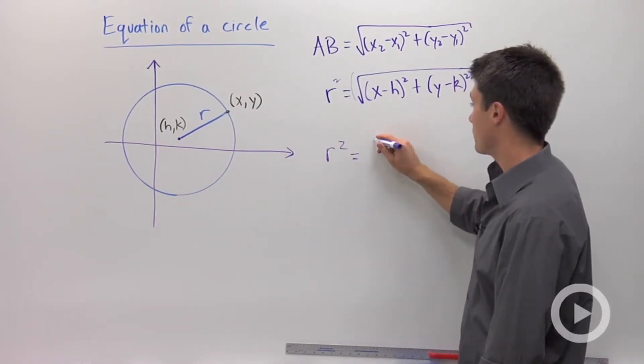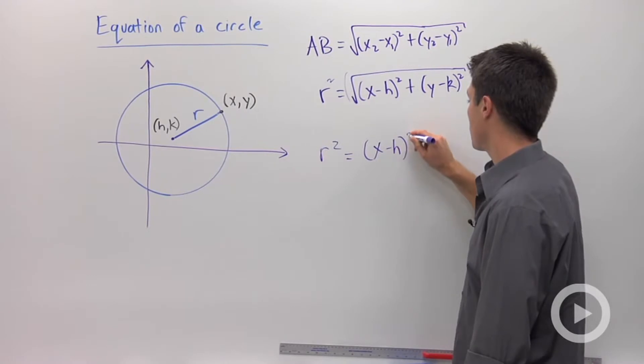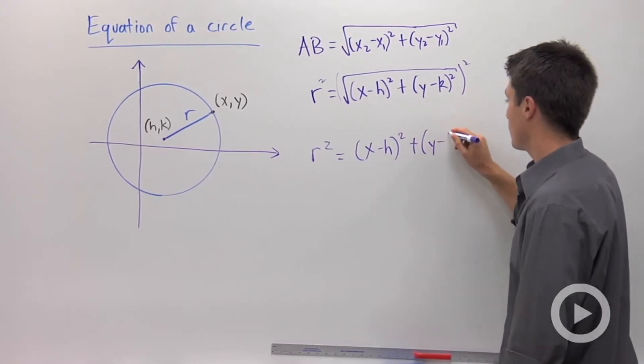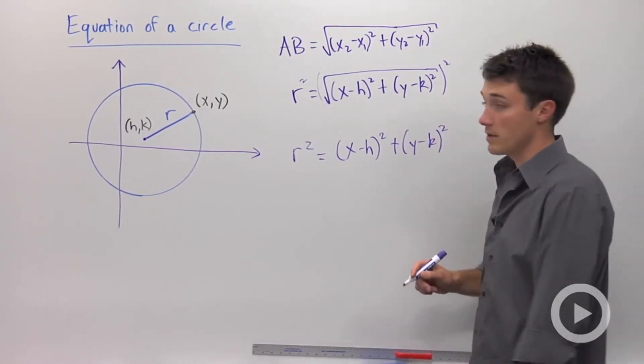So r squared is equal to x minus h, quantity squared, plus y minus k, quantity squared.